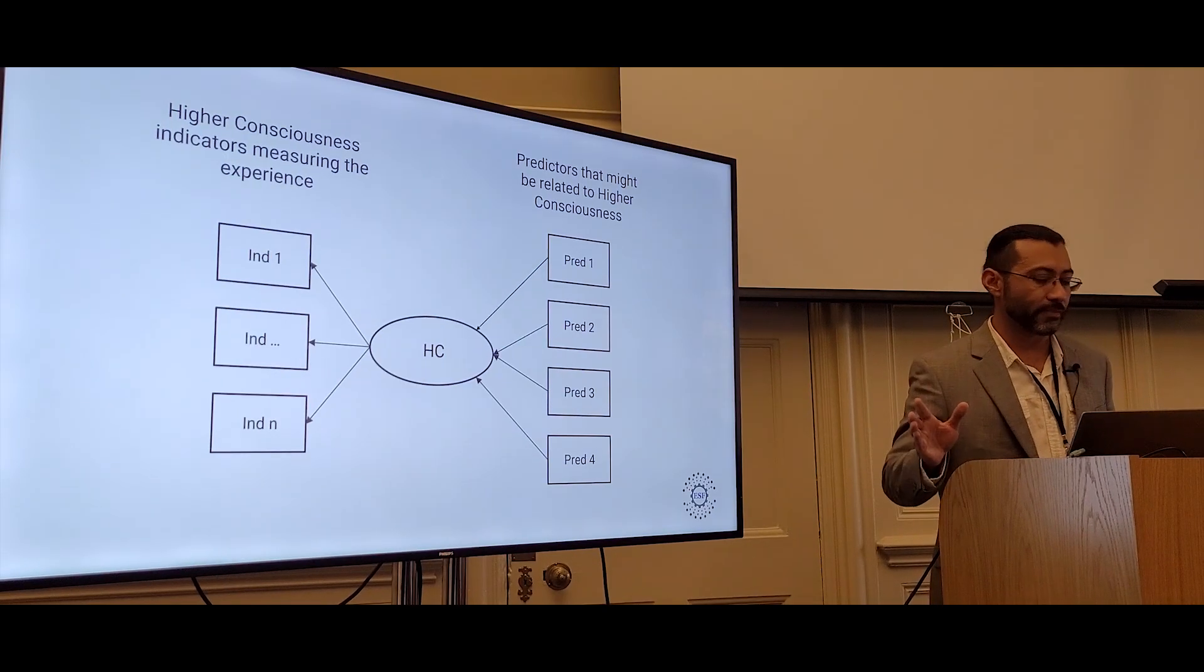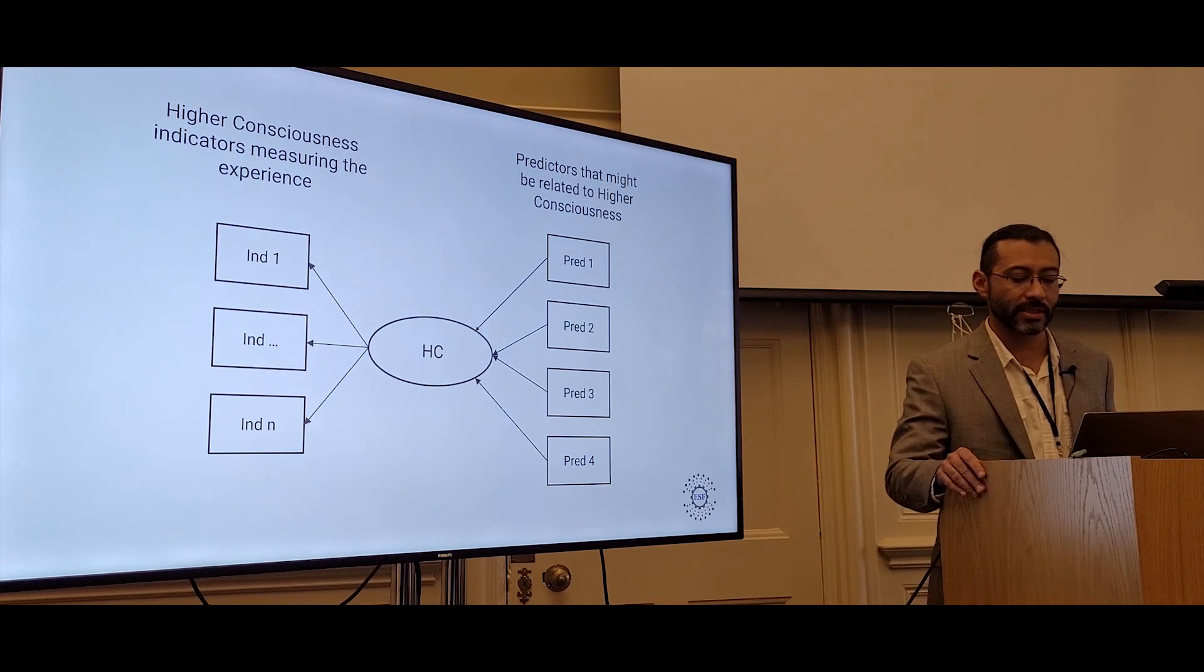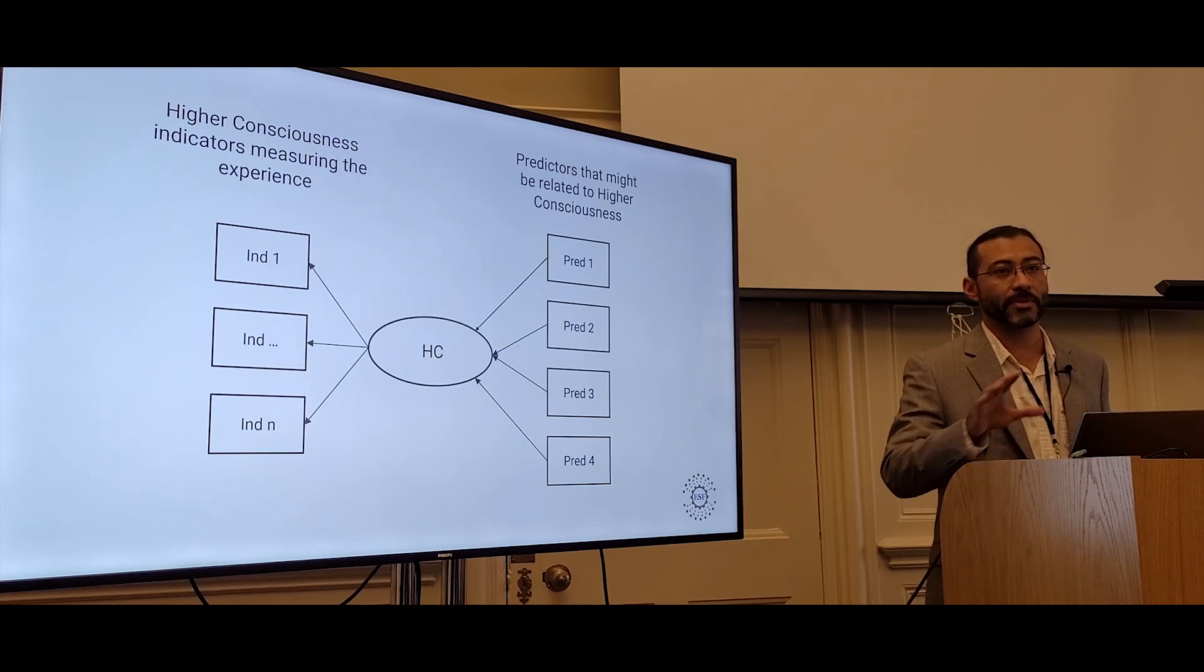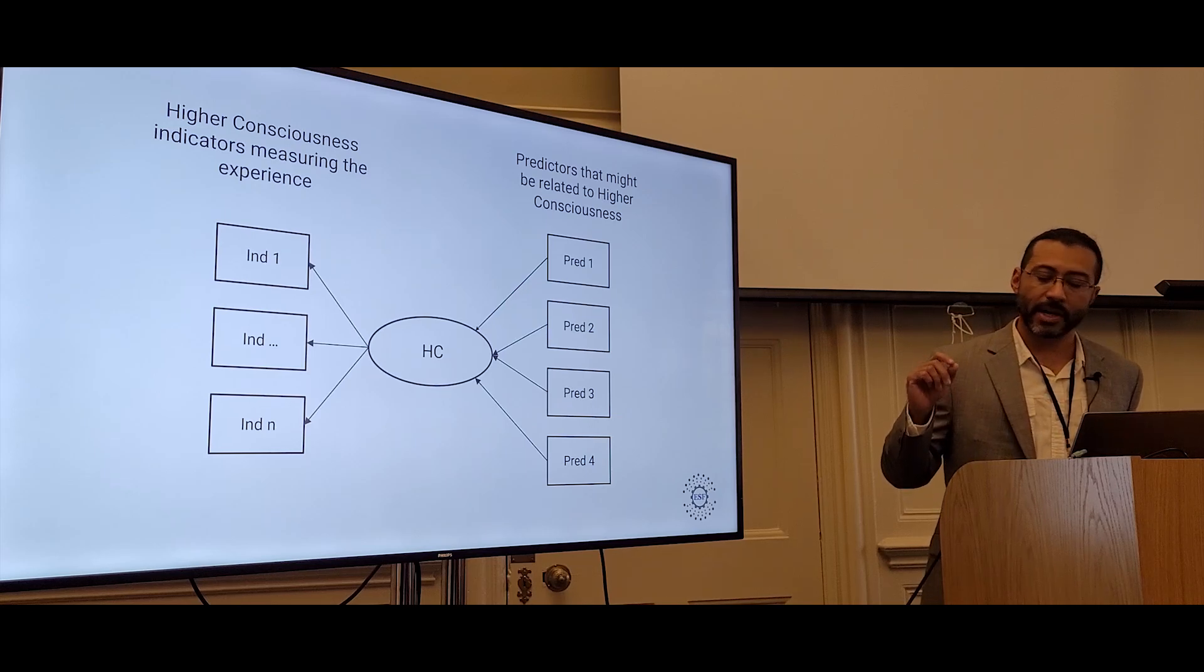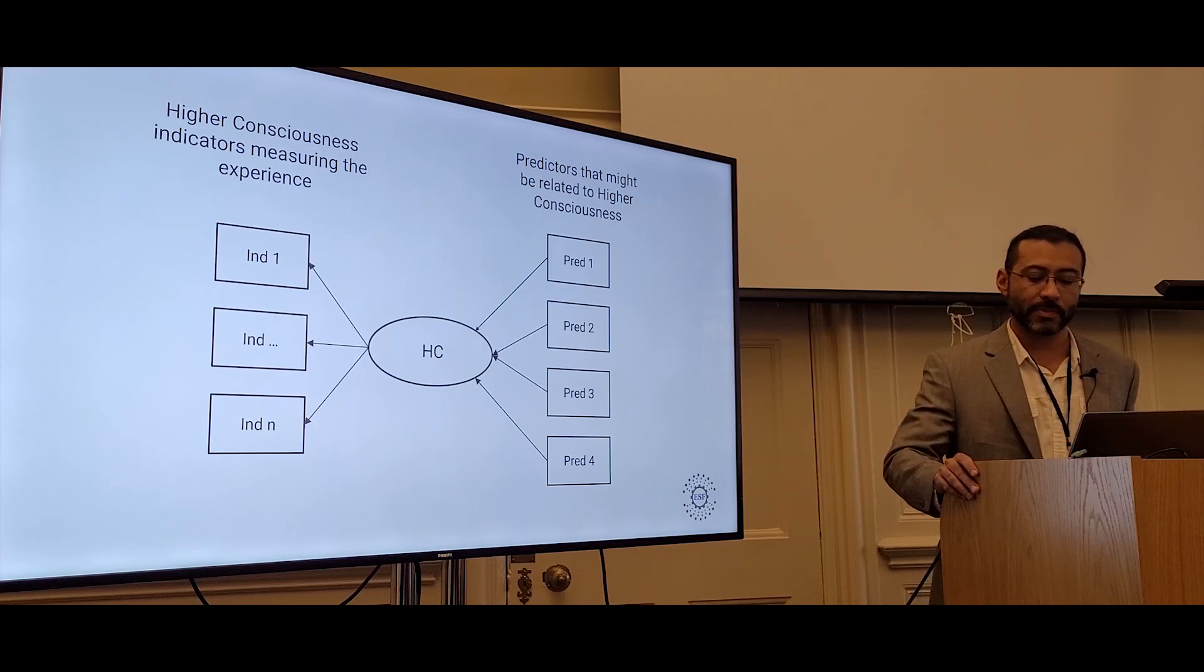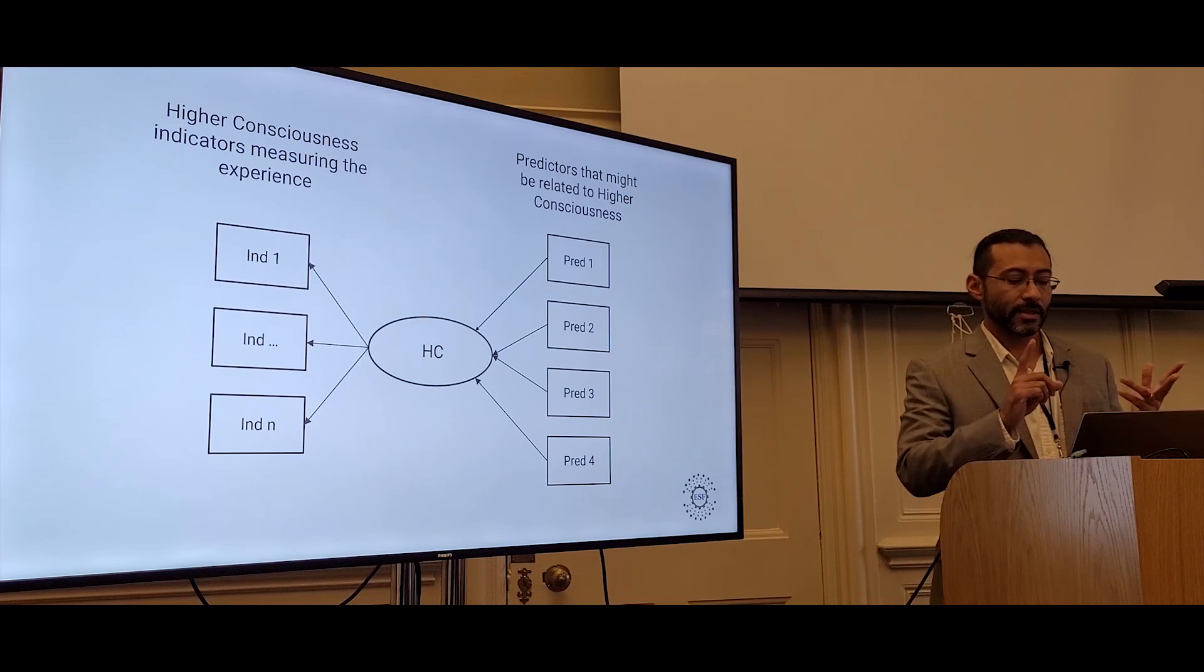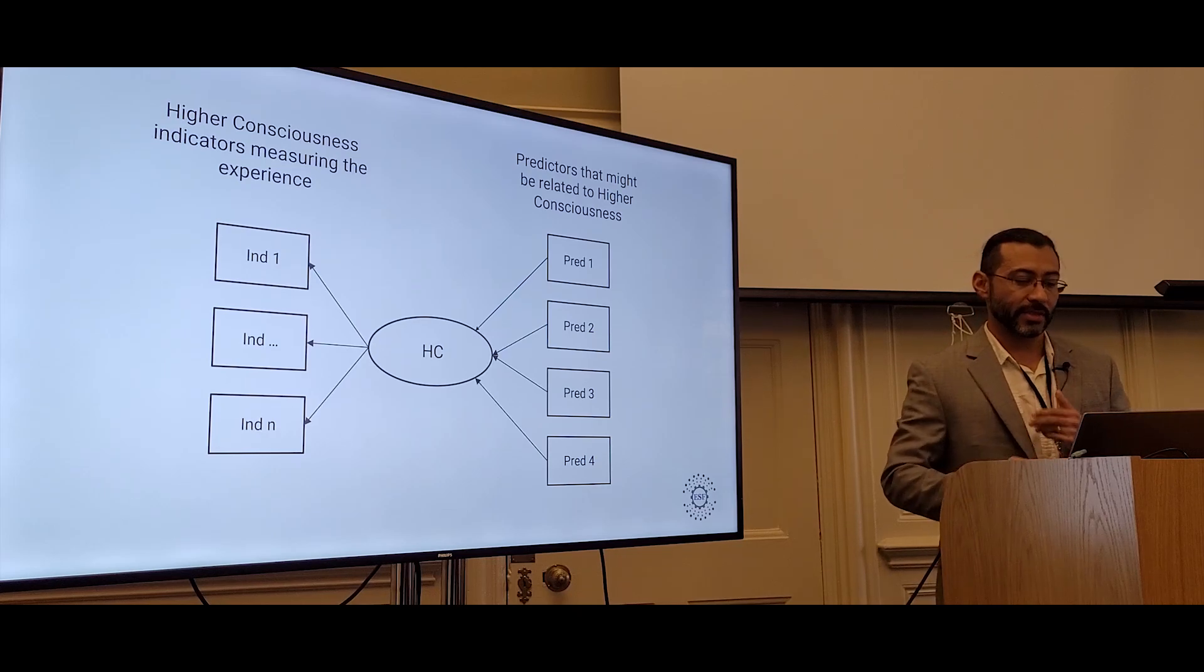The boxes on the right represent possible predictors of higher consciousness. These can range from biological influences, psychological ones, even attitudes and behaviors that might be supportive of the process. Using this technique, we can now, with high accuracy, understand the biological components of these experiences. And there appears to be three major systems involved: the nervous system, the reproductive system, and the digestive system.